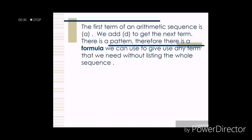The first term of an arithmetic sequence is denoted as a. We add d, the common difference, to get the next term — we already discussed this in the previous video. There is a pattern, and therefore there is a formula we can use to find any term we need without listing the whole sequence. This is especially useful when looking for the 110th, 14th, or 50th term.